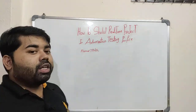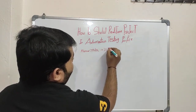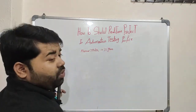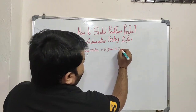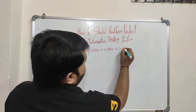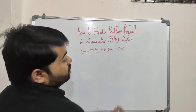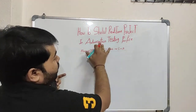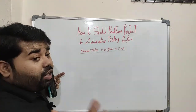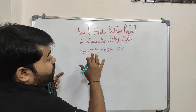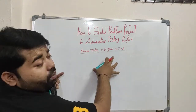For example, you are a manual tester with 10 years of experience and you are planning to switch to an automation profile. How can you put your experience in your resume in automation? What projects you have worked on in manual testing and how to show them in your automation testing profile?